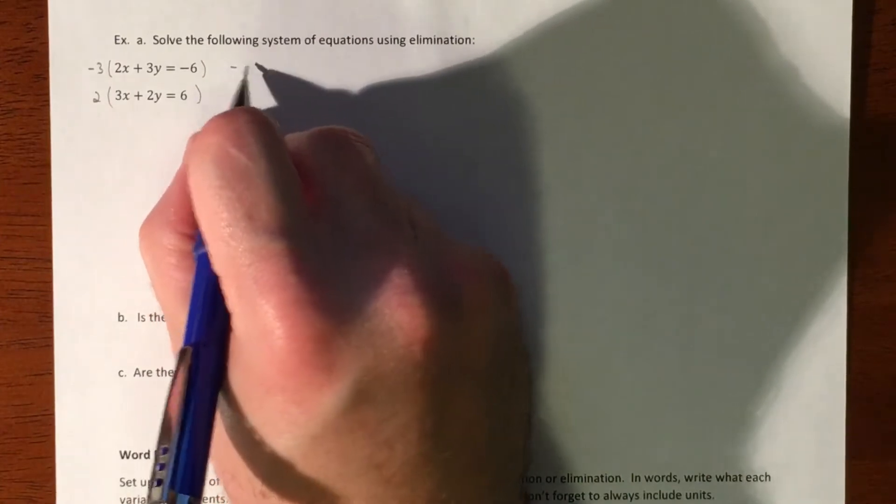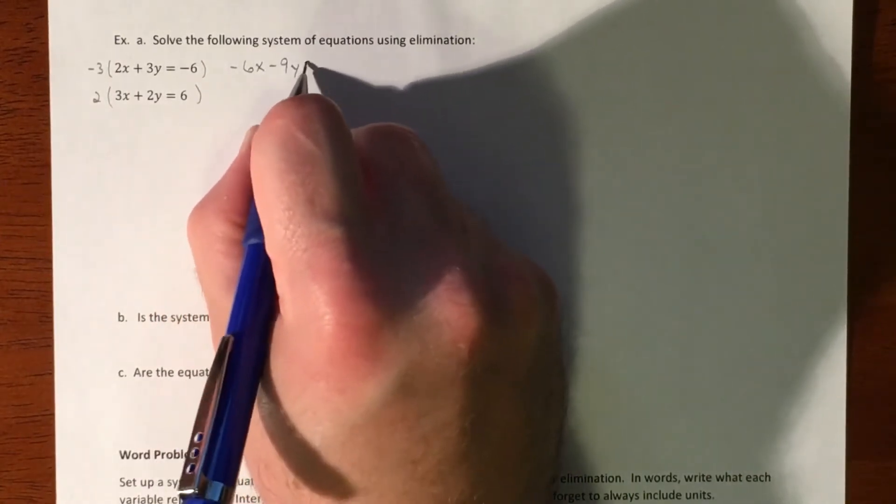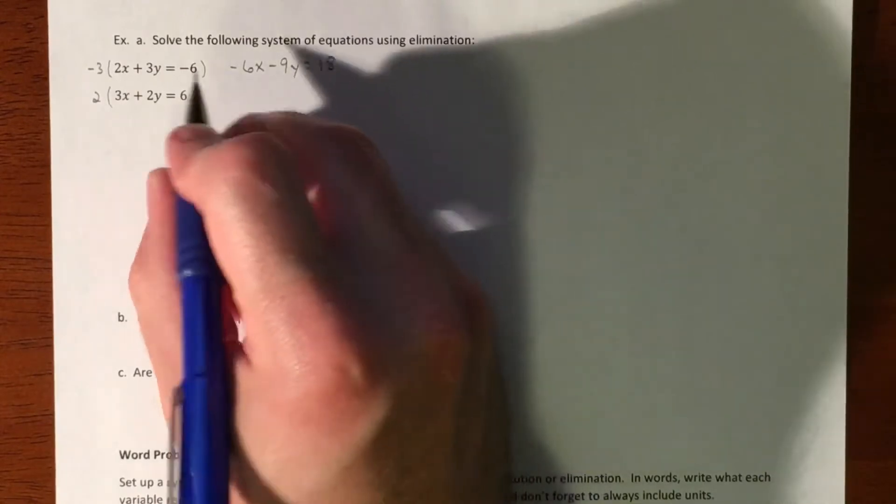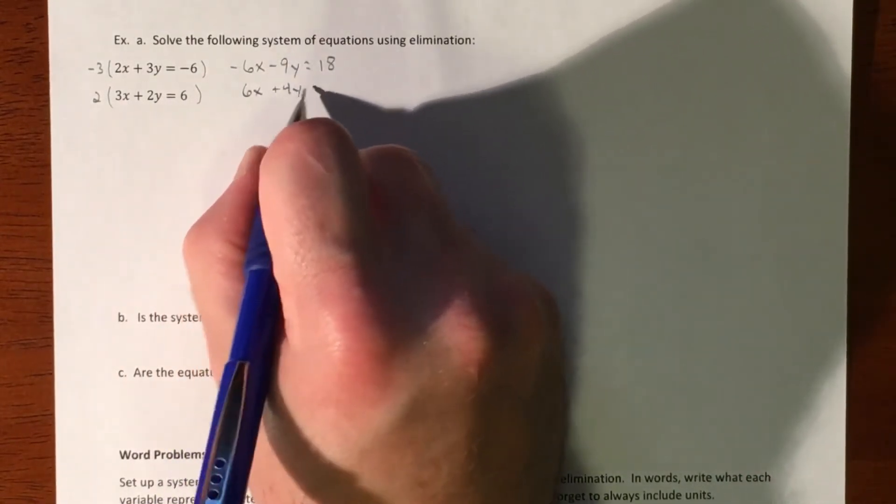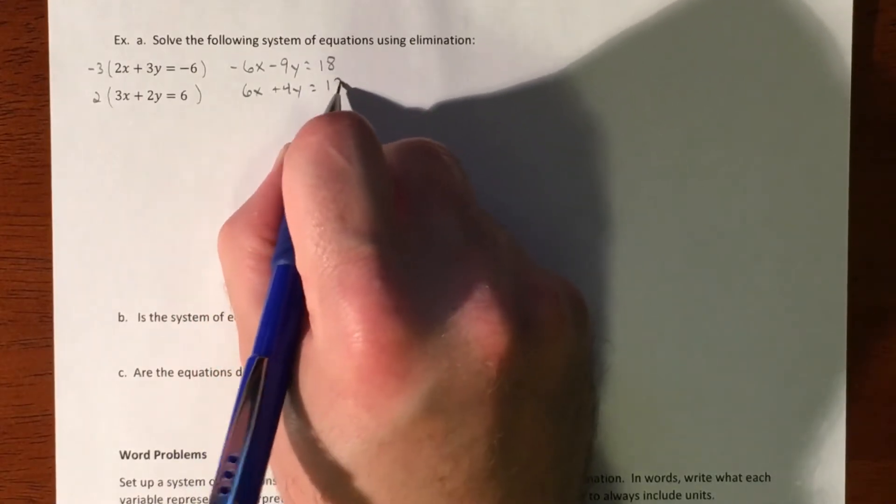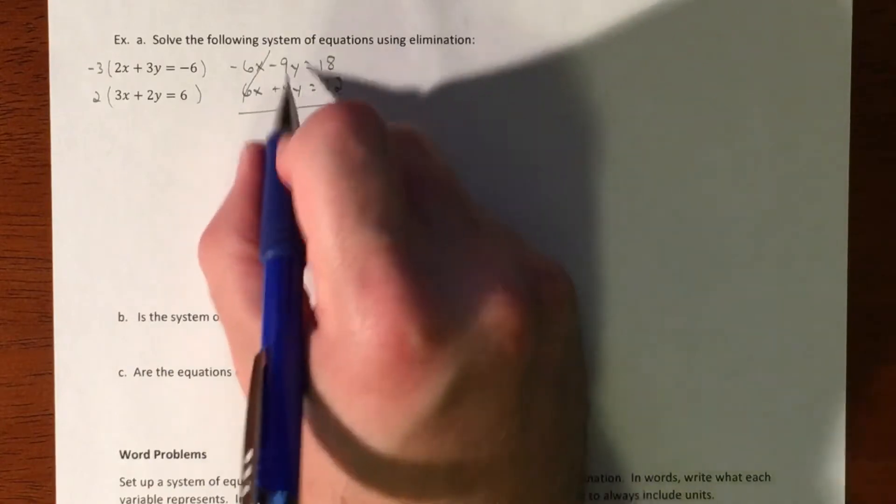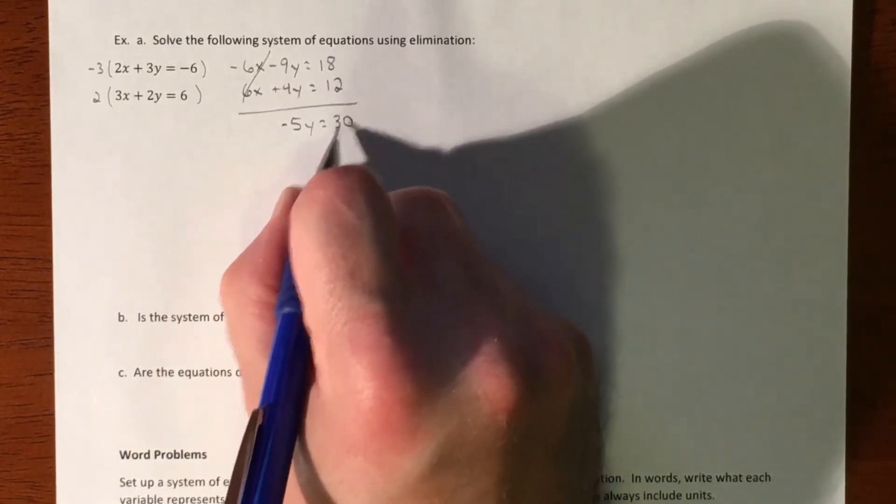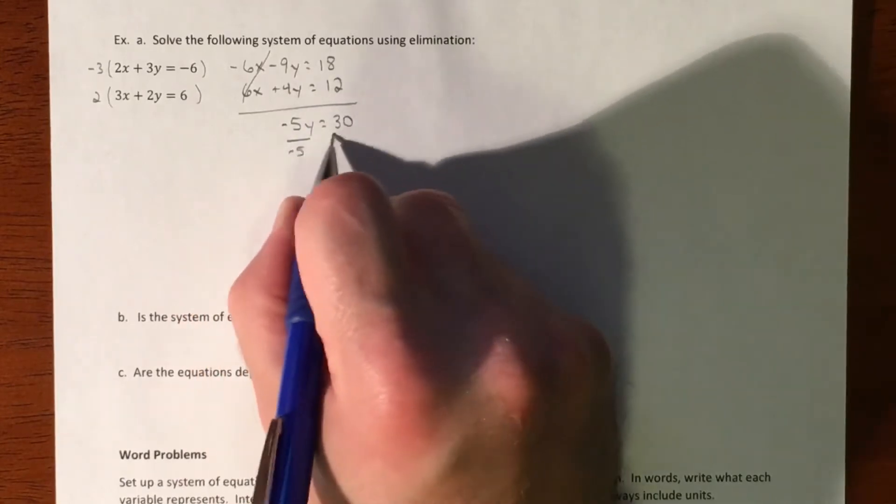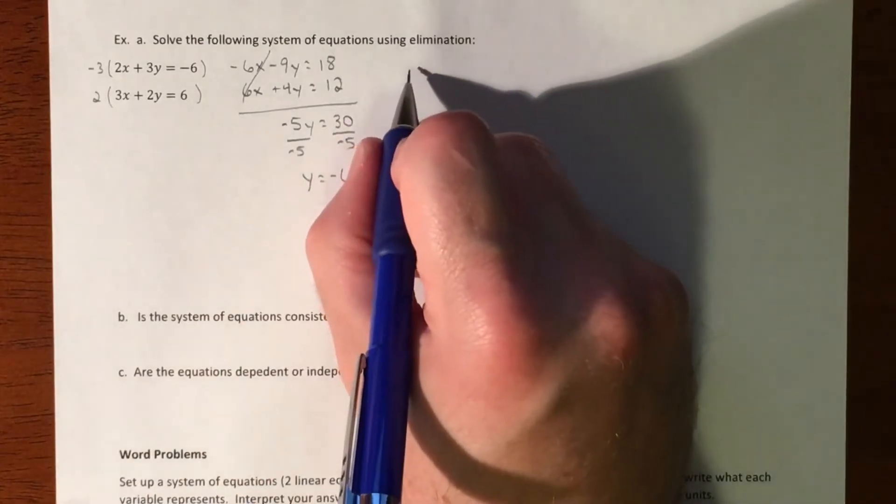So that's going to get negative 6x minus 9y equals 18, and then this is going to get 6x plus 4y equals 12. So the x's go away. We're going to combine our y's, so negative 5y equals 30. Divide by negative 5, y is going to equal negative 6.